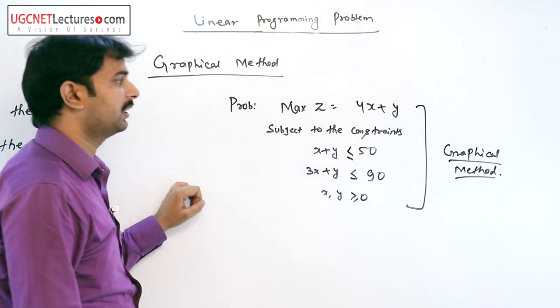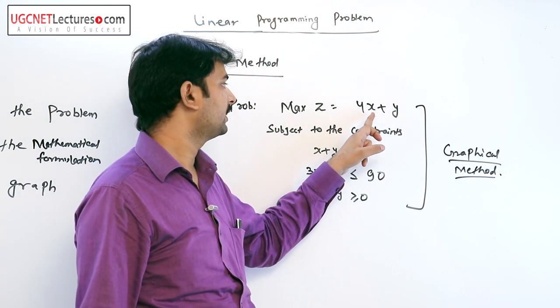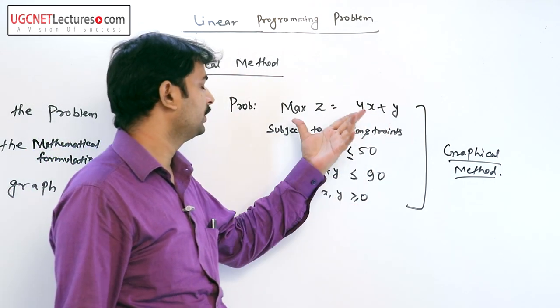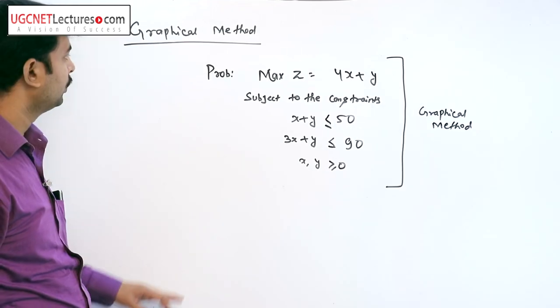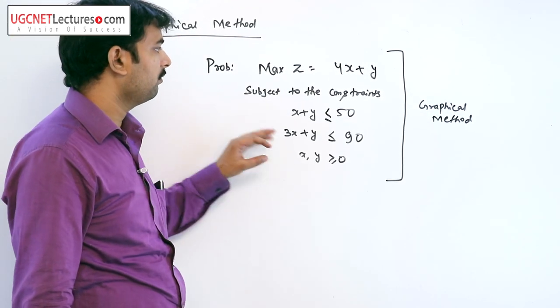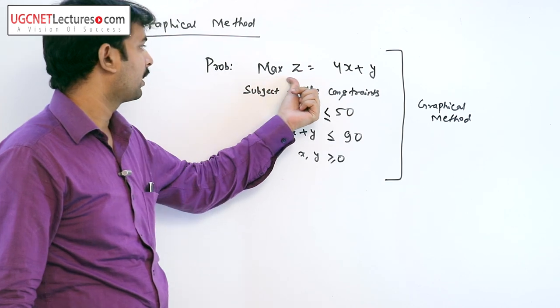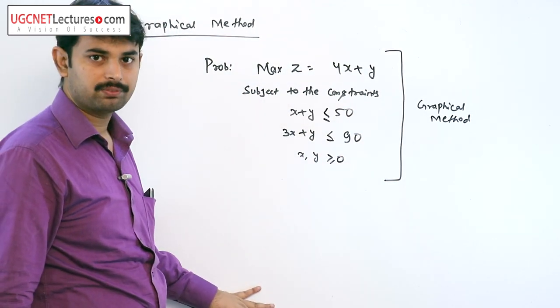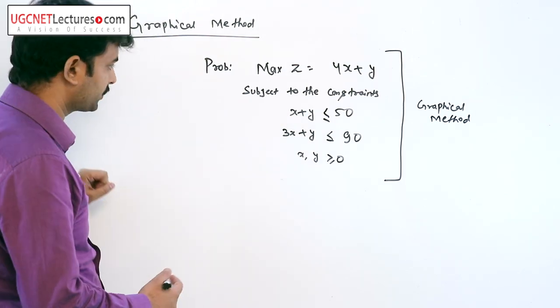In the graphical method, when the decision variables are two, we can solve this problem by graphical method. To solve this problem graphically, first we plot a graph between these two constraints.